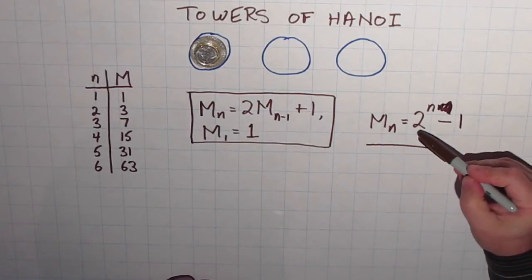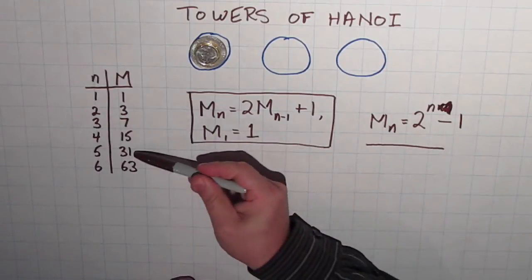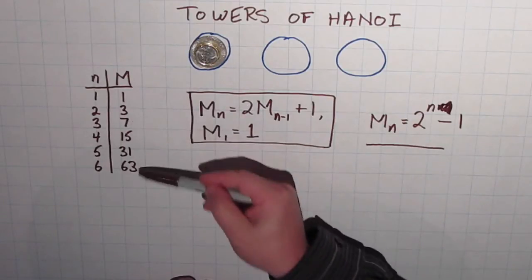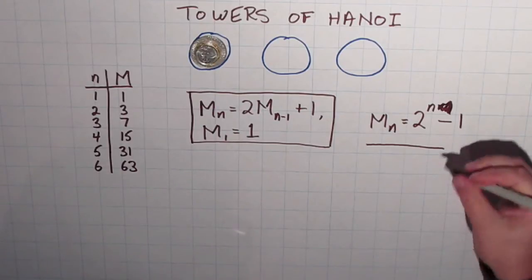So for instance, if I want to know how many moves it took to do five coins, it would be 2 to the 5, which is thirty-two minus one, which is thirty-one, which is right there. And if you go through the numbers we have here, you will produce all the numbers we have there. So at least for the first six coins, this formula seems to be working.